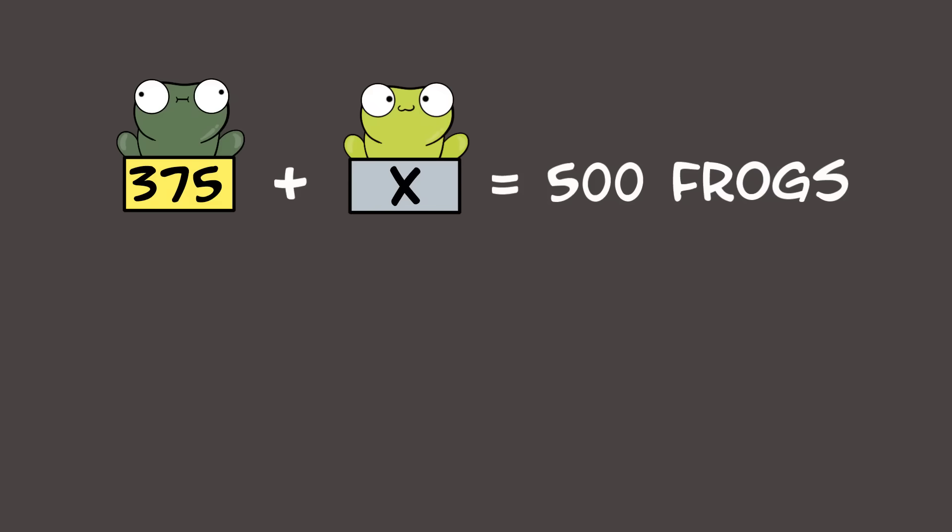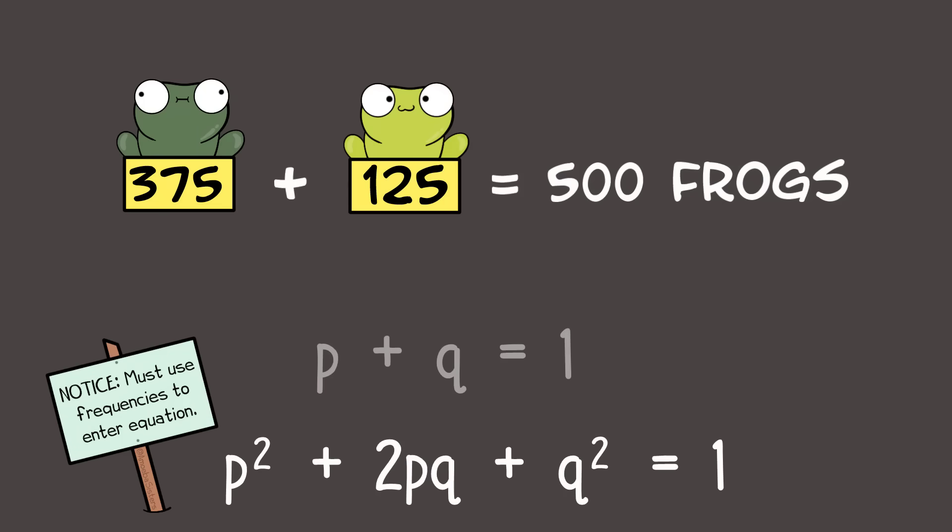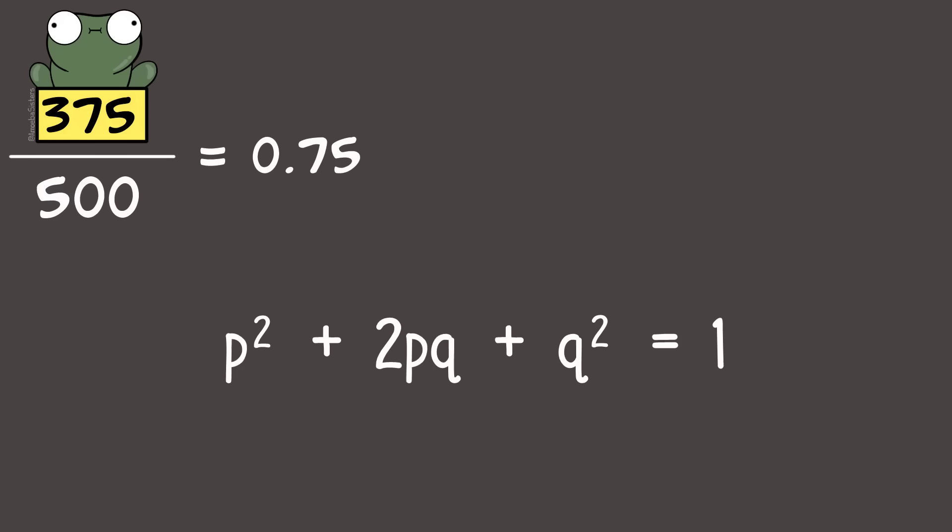So 375 frogs are dark green out of 500 total. That would mean 125 frogs are light green since there are 500 frogs total. But I can't use whole numbers like that as both of these equations ultimately are equal to 1. I need frequencies for these equations. Now I could say 375 dark green frogs out of 500 total frogs is 0.75, but all I know is that would be the frequency of dark green frogs.